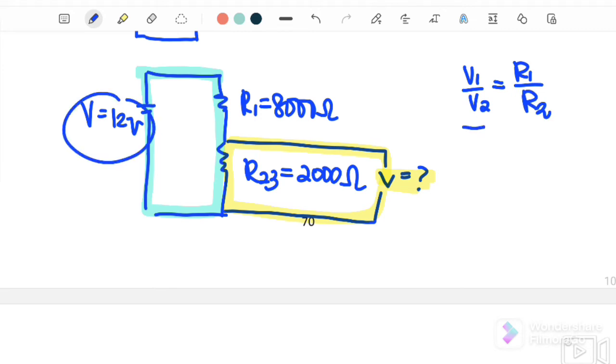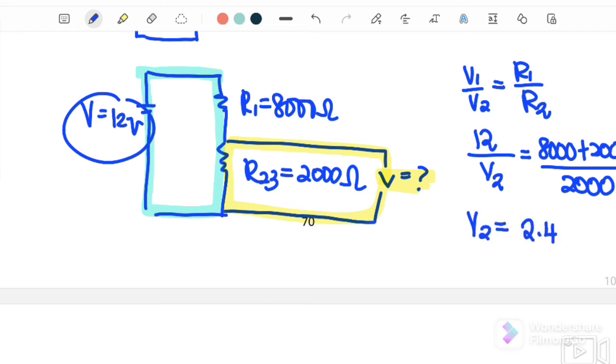V1 here is 12, and V2 we don't know. R1 is the blue color loop where we have 8,000 plus 2,000. R2 is the yellow color resistor, which only involves 2,000 ohm. Therefore V2, we will get the value is 2.4 volt only.